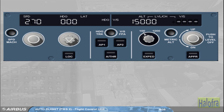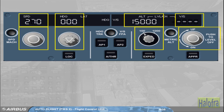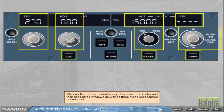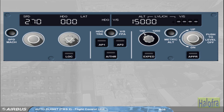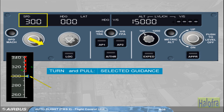In the control areas we can find four selector knobs and their associated windows, as well as three mode engagement push buttons. As a general rule, if you turn a selector knob, you select a guidance target. If you then pull the same knob, you engage a mode which will guide the aircraft to the selected target. Such a mode is a selected mode. The selected target is clearly displayed on the associated window and on the associated PFD scale using a blue target symbol.